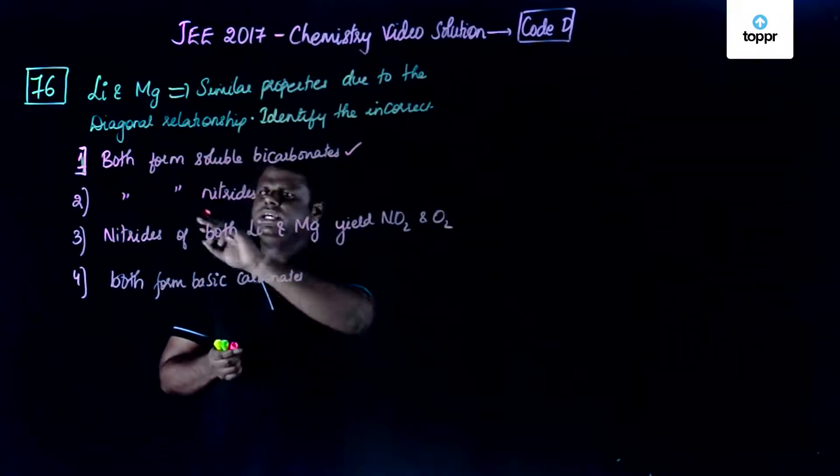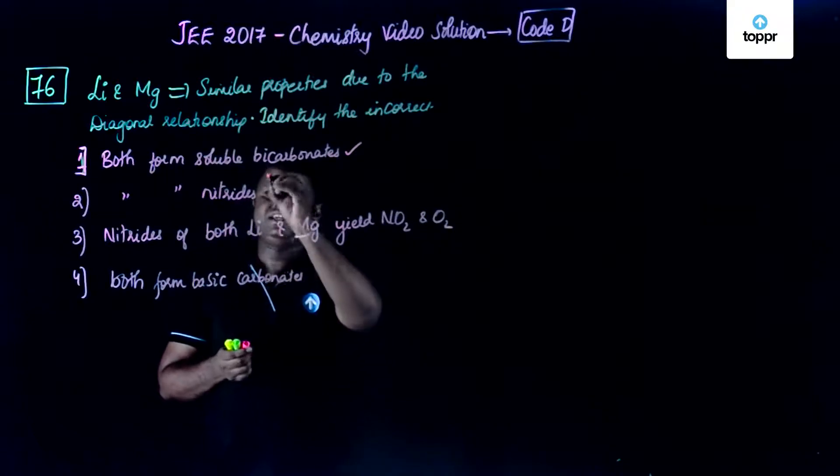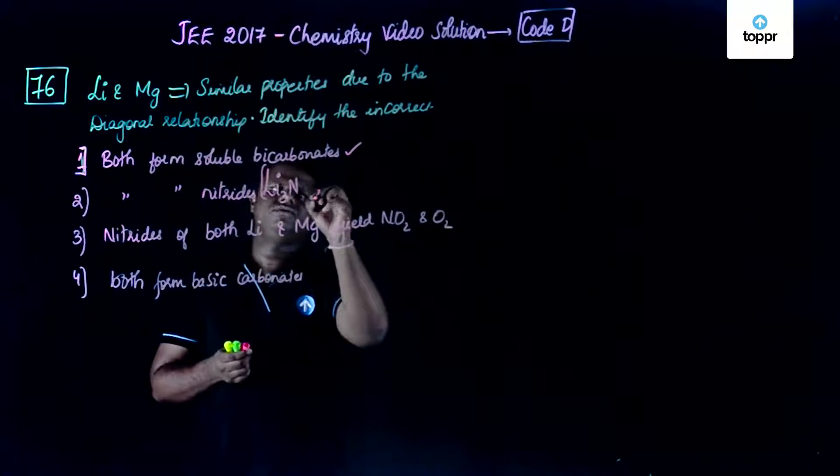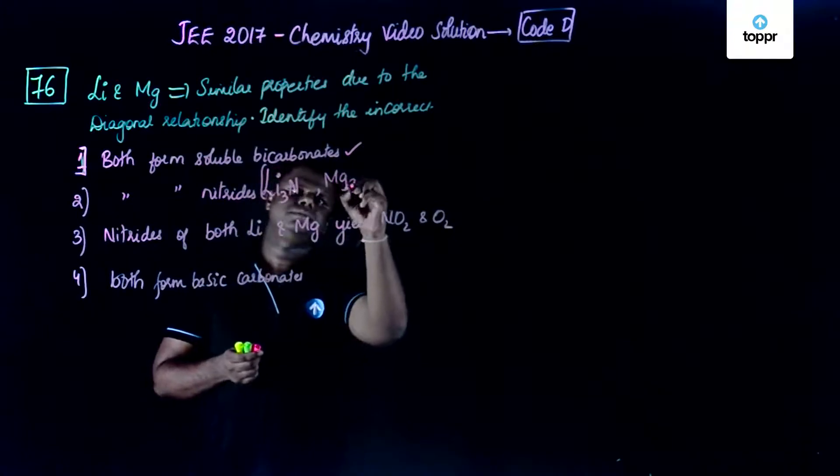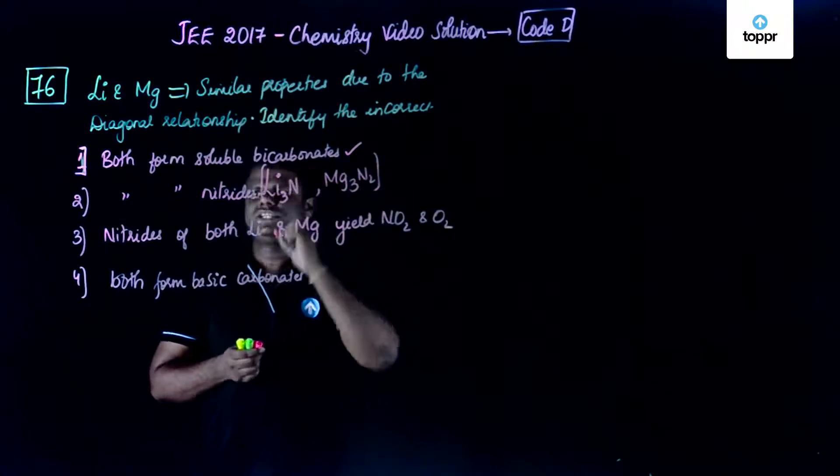And the next is both form nitrites. Yes, lithium forms Li3N and magnesium forms Mg3N2. So they are stable nitrites.